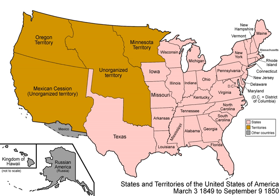The slave trade, but not the institution of slavery, was banned in the District of Columbia. A more stringent fugitive slave law was enacted, requiring law enforcement in free states to support the capture and return of fugitive slaves, and increasing penalties against people who tried to evade the law.